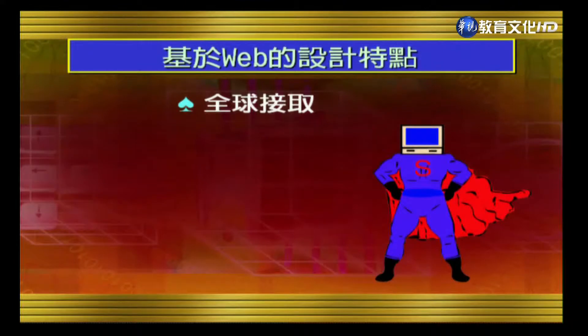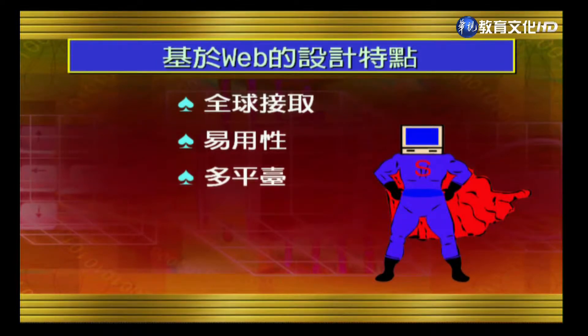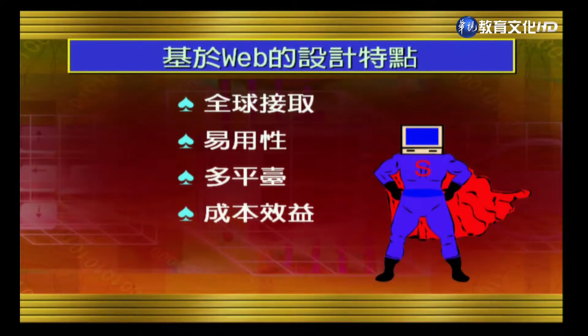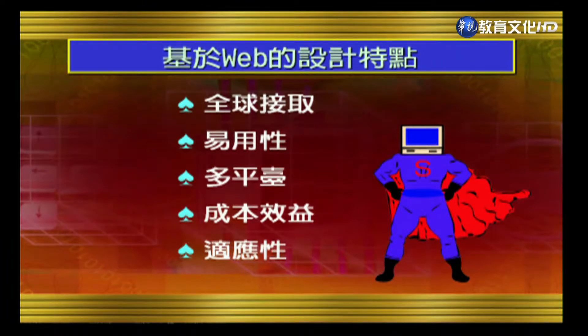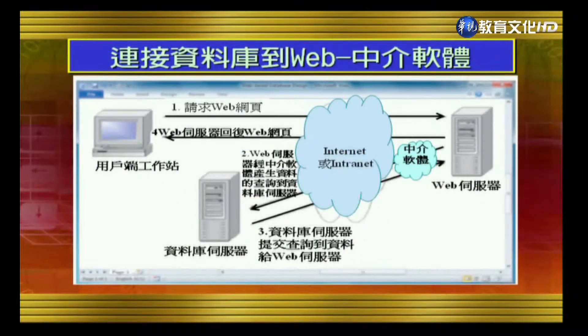First, DDL and DCL for database administrators; second, DML for users. Additionally, application programs access data through interfaces such as ODBC or JDBC. Now let's look at web-based design. The concept of web-based design stores the database across different network locations so that data can be accessed via the web. The advantages include: first, global access; second, ease of use since users are already familiar with the web; third, multi-platform support — Windows, Oracle, and other platforms are all supported.